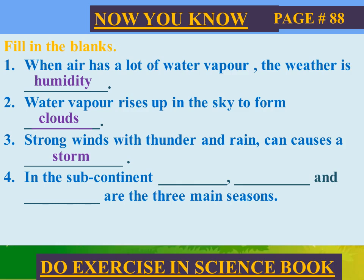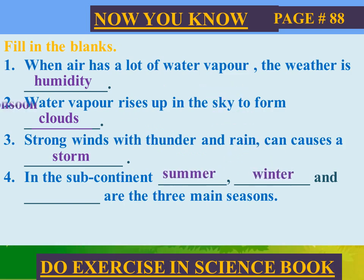Number four: in the subcontinent, summer, winter, and monsoon are the three main seasons. Baraas sagheer mein garmi, sardi aur monsoon teen ehm mausam hain. Do the exercise in the science book.